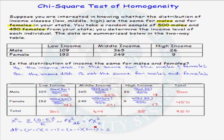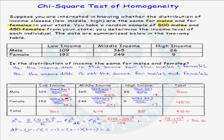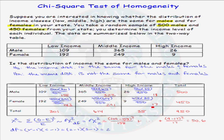We're ready to calculate the actual value of our test statistic. For each cell, we take the observed minus the expected cell frequency, square that quantity, and divide by the expected cell frequency. For the first cell: (109 − 158)² / 158. The second term: (365 − 323)² / 323. The last term: (9 − 17)² / 17. Adding up all six terms of the chi-square test statistic, we find a value of 50.6.